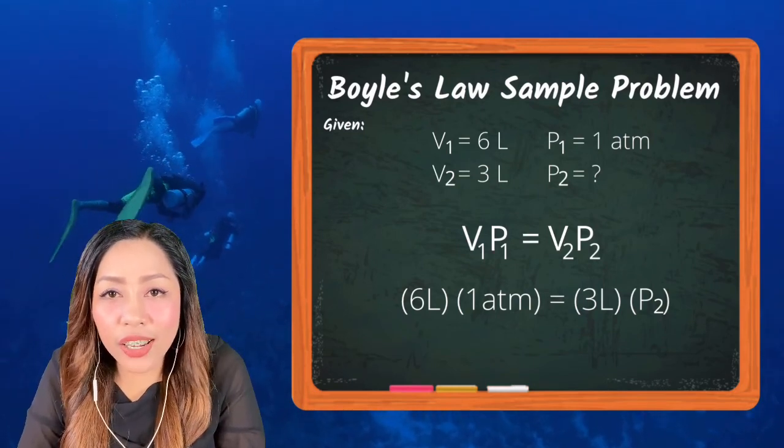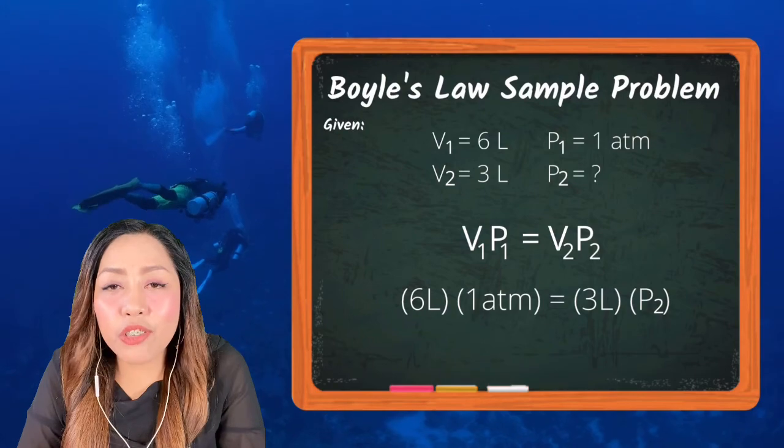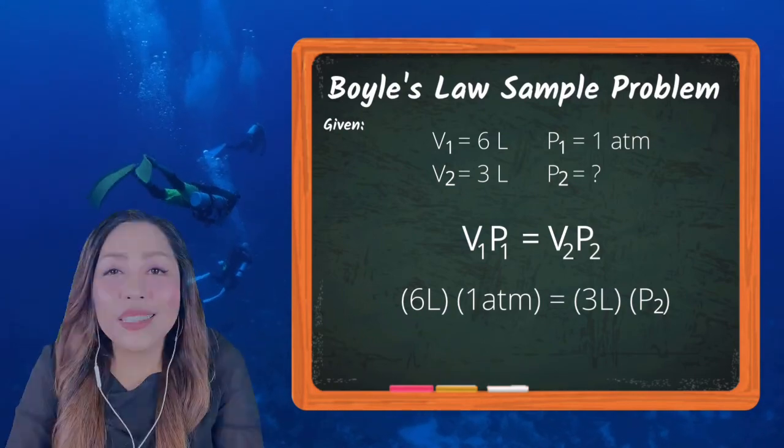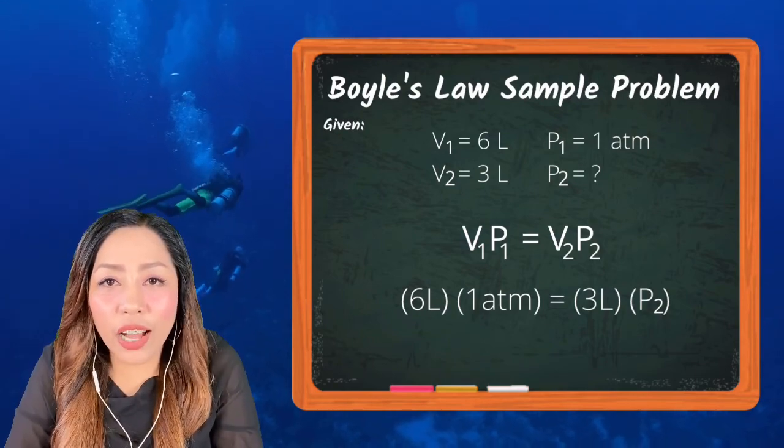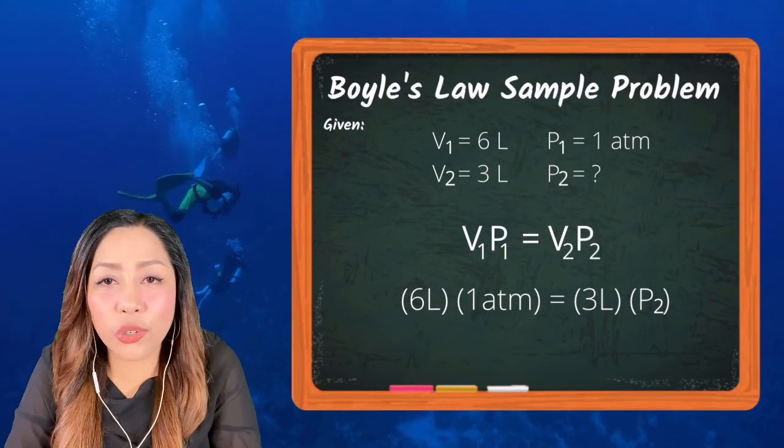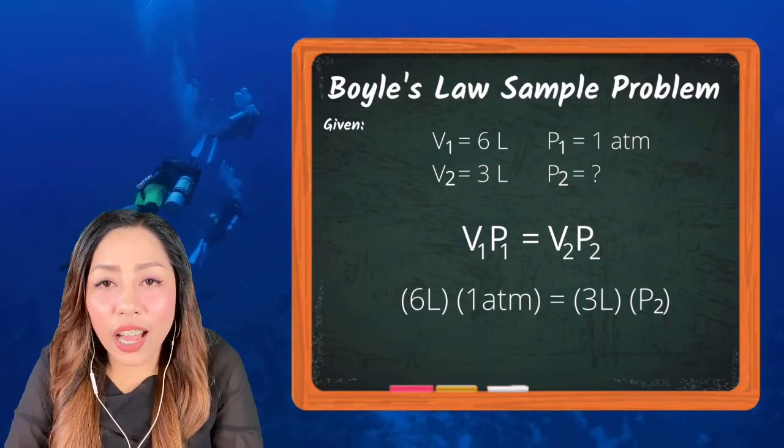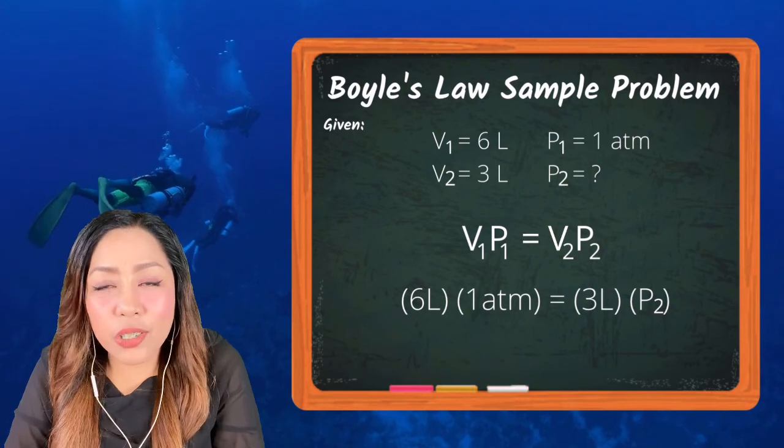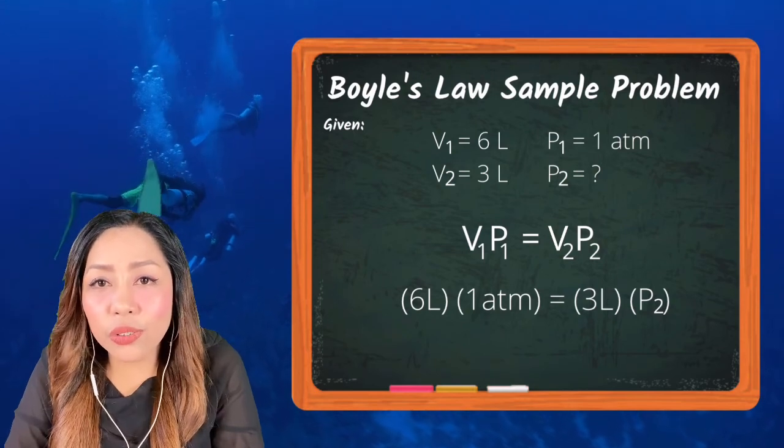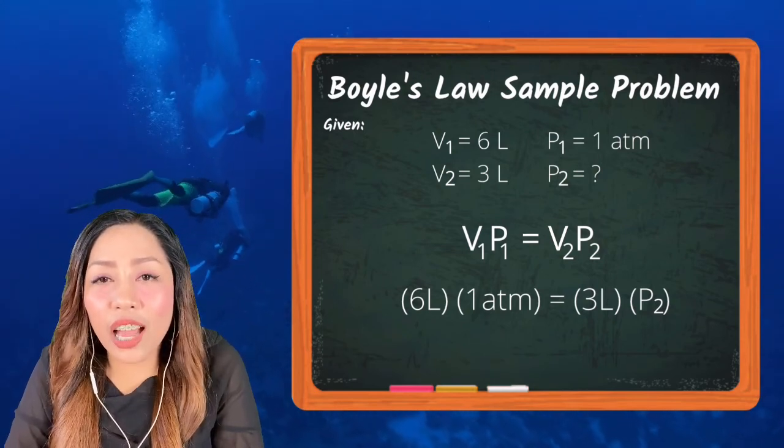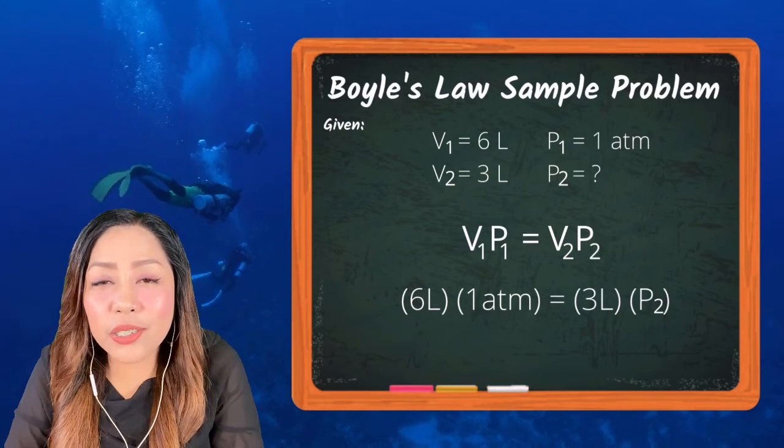V₁ times P₁ is equal to V₂ times P₂. Substituting our given values to this equation, we'll have 6 liters times 1 atmosphere is equal to 3 liters times the unknown, which is P₂.